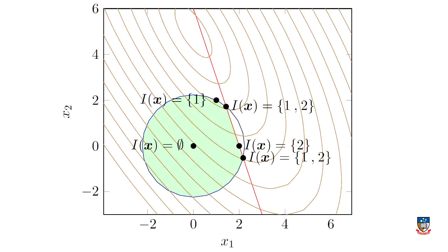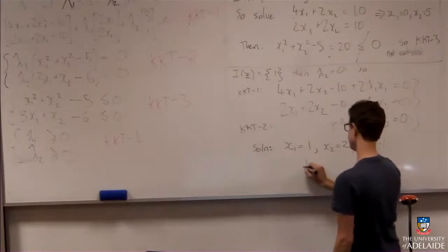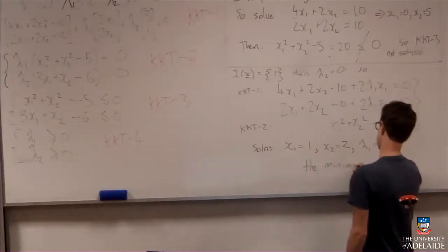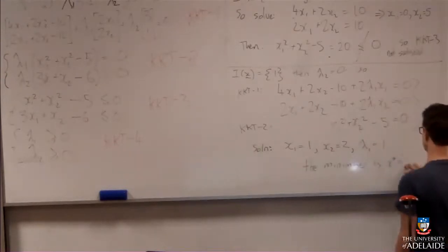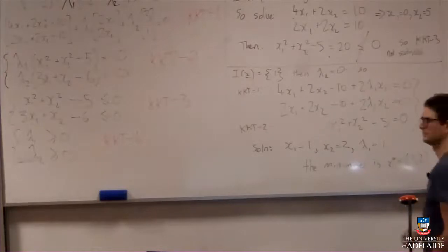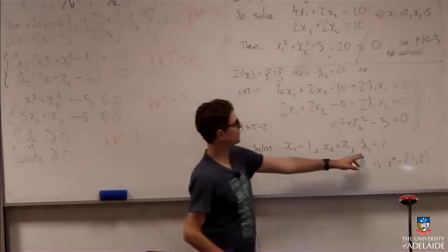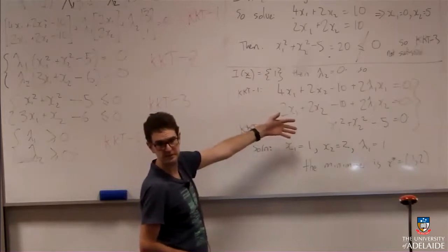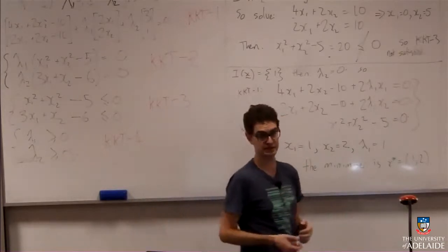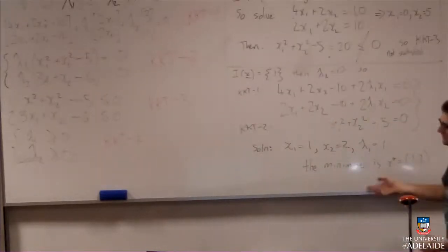So this is a minimizer — and in fact it is the minimizer. x* = (1, 2), because the point (1, 2) with λ₁ = 1 and λ₂ = 0 solves the KKT equations, and we know it is the minimizer since this is a convex problem with only one minimizer.